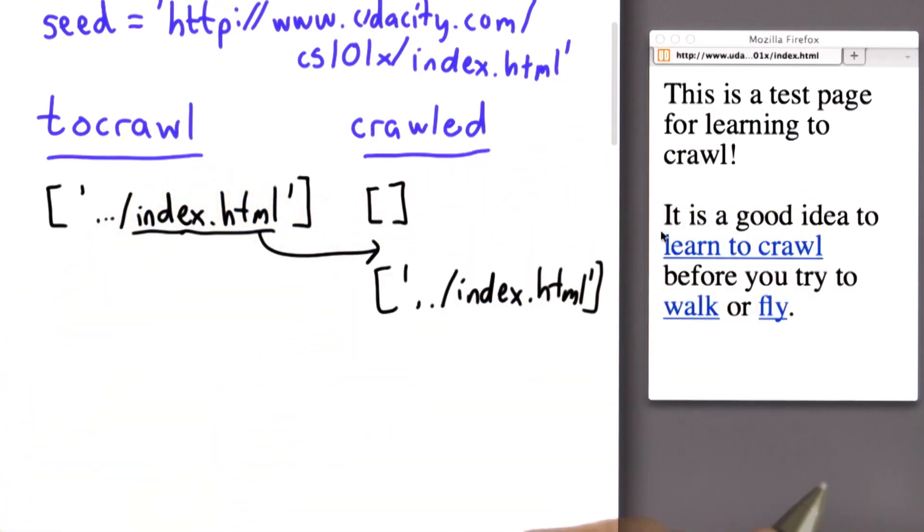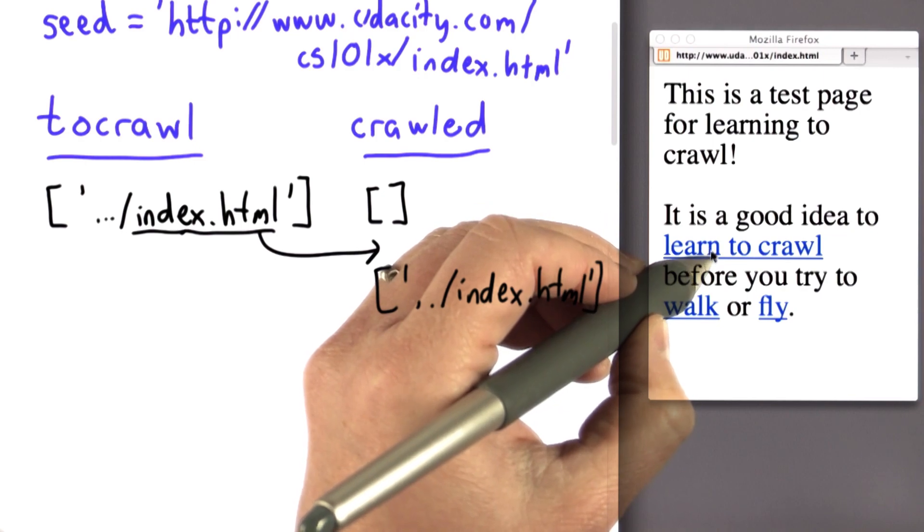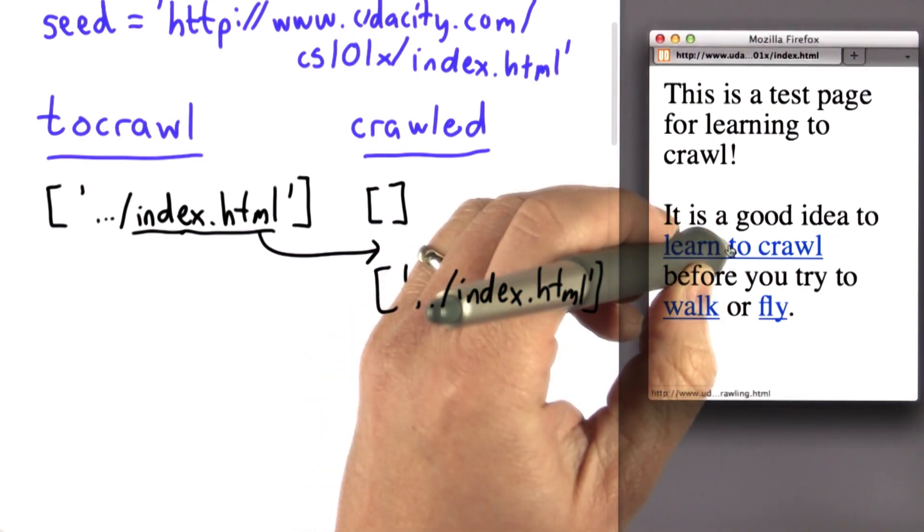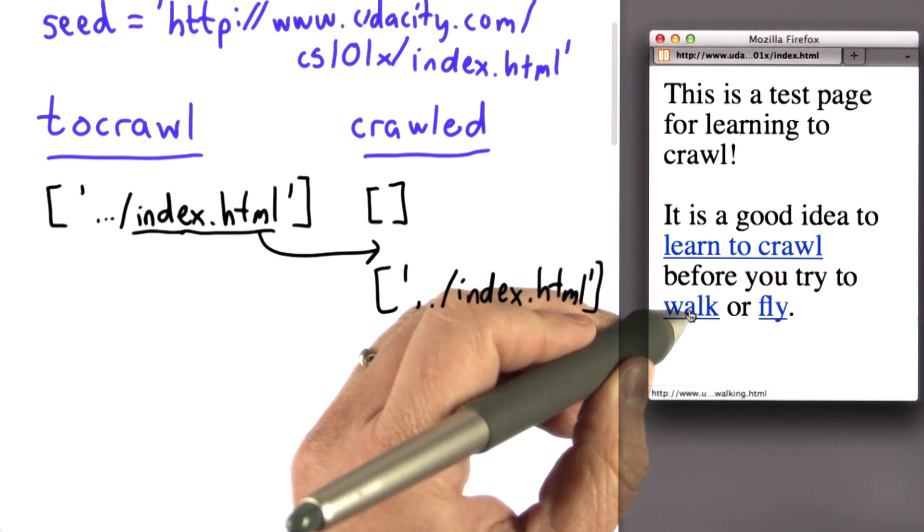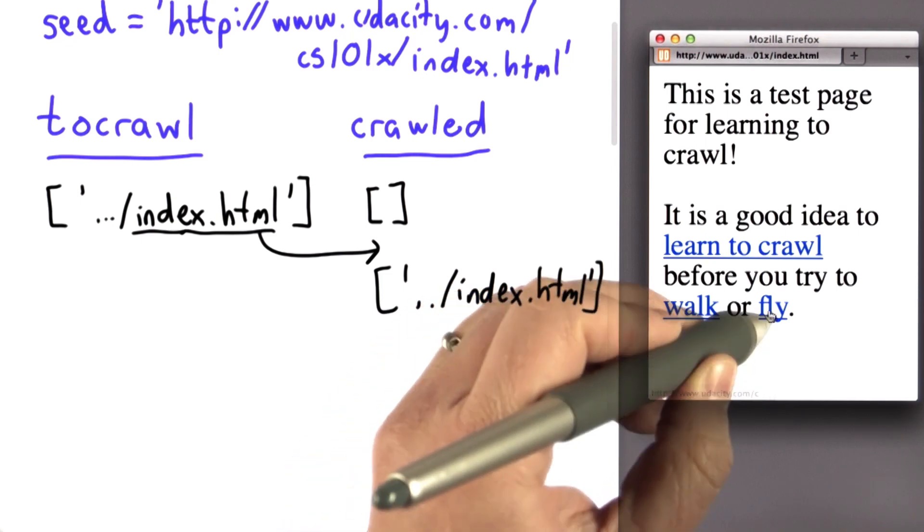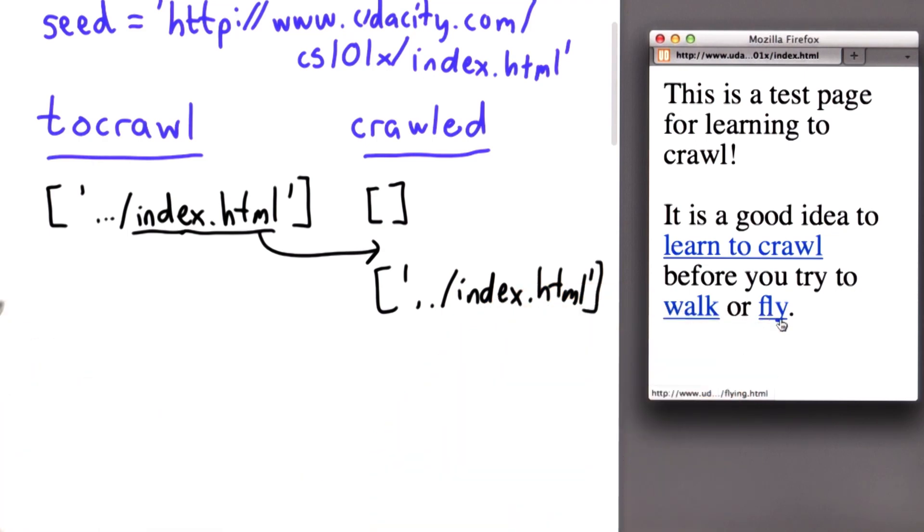But when we looked at the links on the index page, we found three new links on that page. We found the link here, which goes to crawling.html. We found the link here, which goes to walking.html. And we found the link here that goes to flying.html. So the new value of to crawl after crawling this page will have those three links in it.